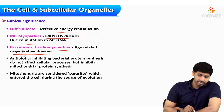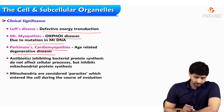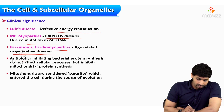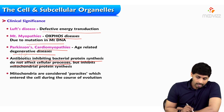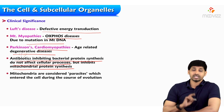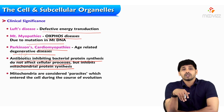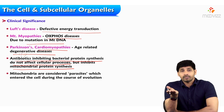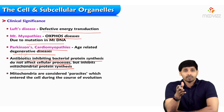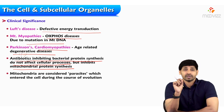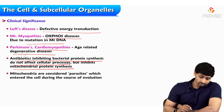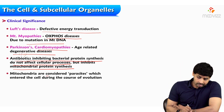This free radical production is the logic behind Parkinson's disease and cardiomyopathies. Also, antibiotics that inhibit bacterial protein synthesis do not affect general cellular processes but do inhibit mitochondrial protein synthesis. So the antibiotics we take, which inhibit bacterial protein synthesis, will also affect mitochondrial proteins.